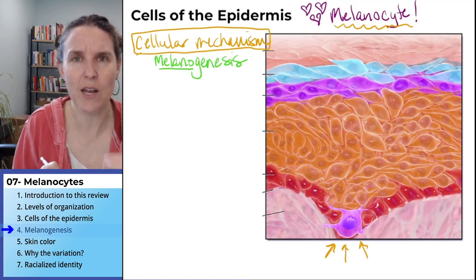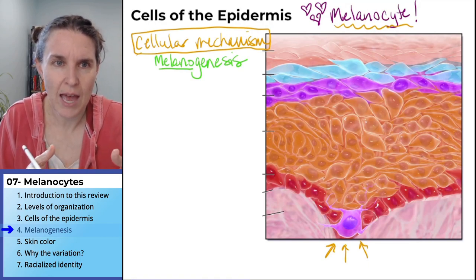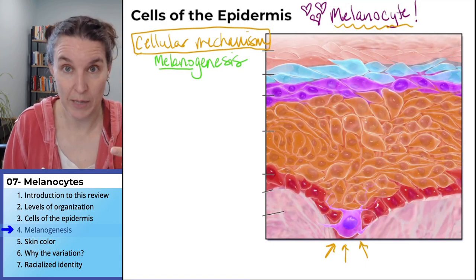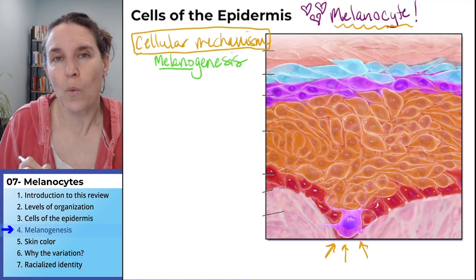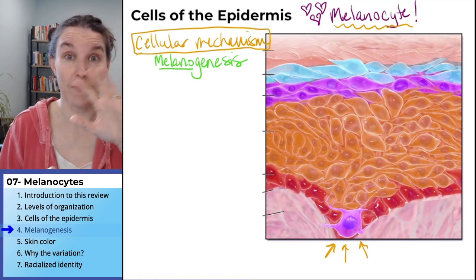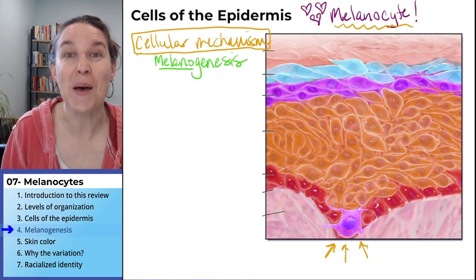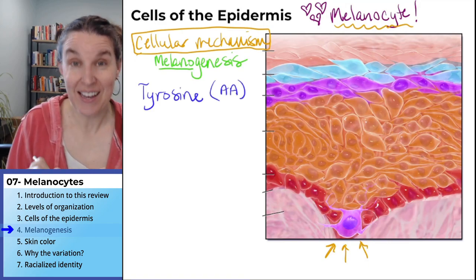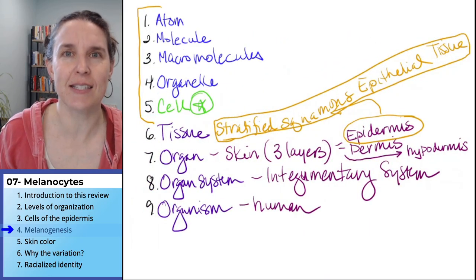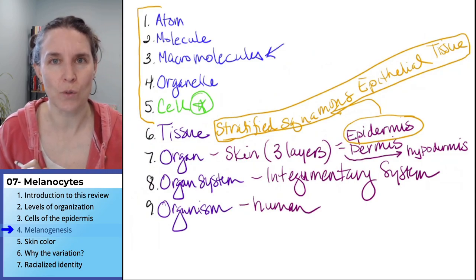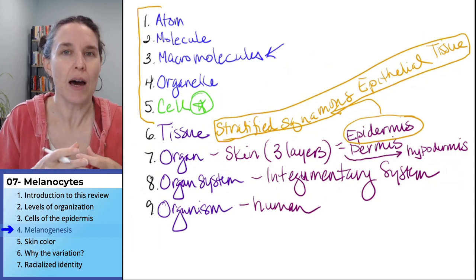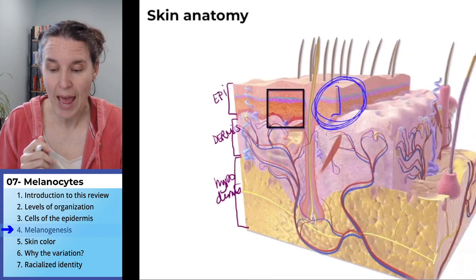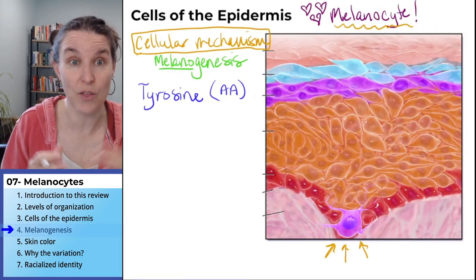That name makes sense: melano — melanin; genesis — birth of. How do we make melanin from the beginning? Melanogenesis starts with an amino acid: tyrosine. An amino acid is a macromolecule — it's a big molecule with many different pieces. It's one part of building a protein, and that one part is going to enter the process of melanogenesis.